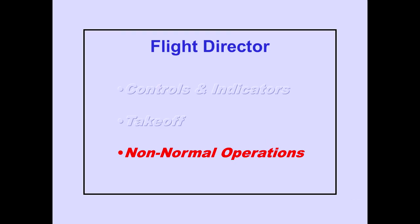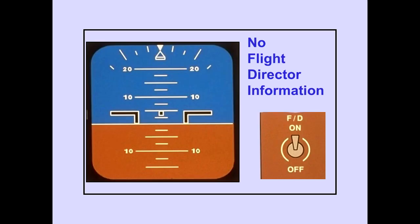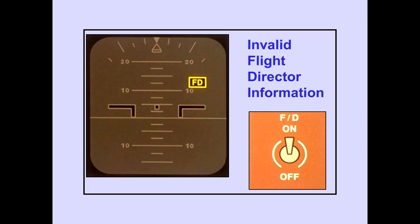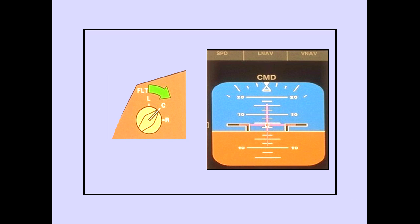Now we will discuss non-normal flight director operation. The command bars are no longer displayed when no flight director information is being received. The flight director flag is displayed when the flight director information is invalid, and in addition, the command bars are no longer displayed. Selecting a different flight control computer restores flight director information.